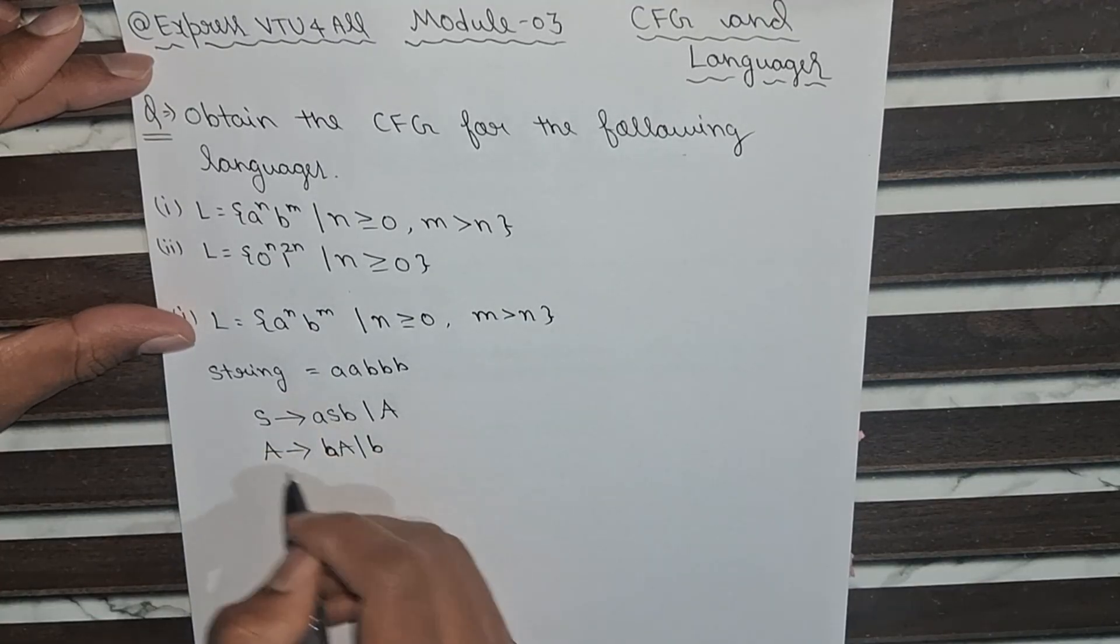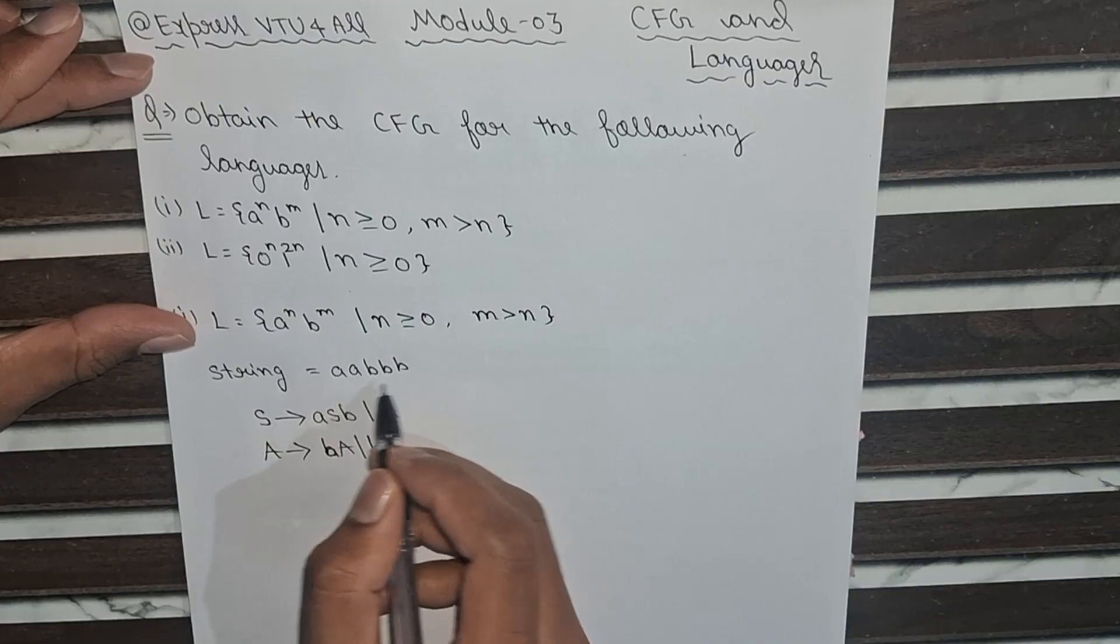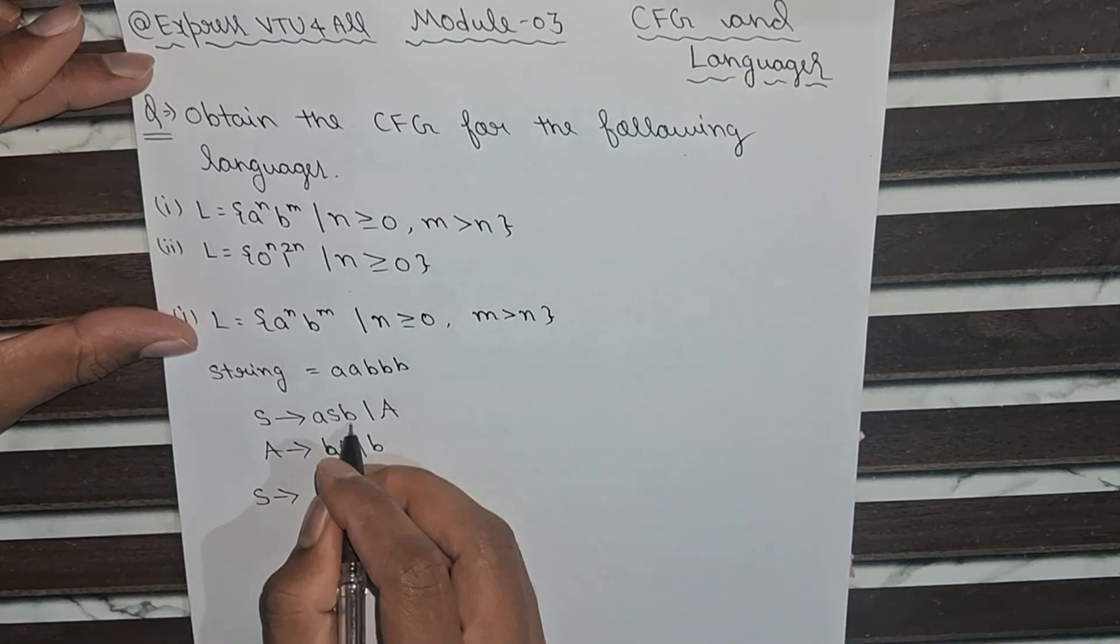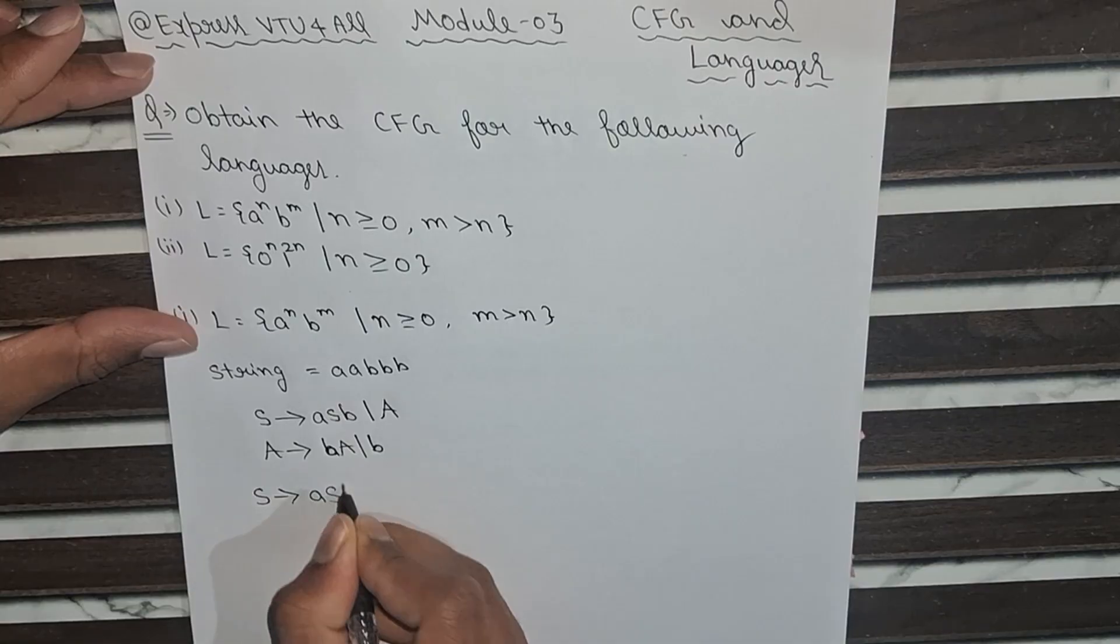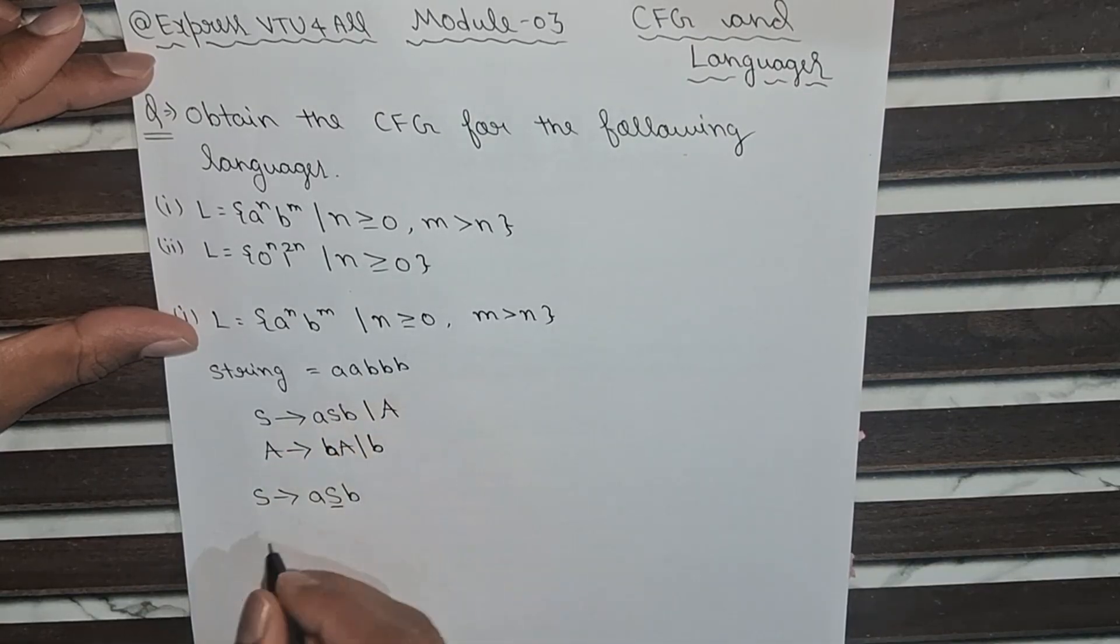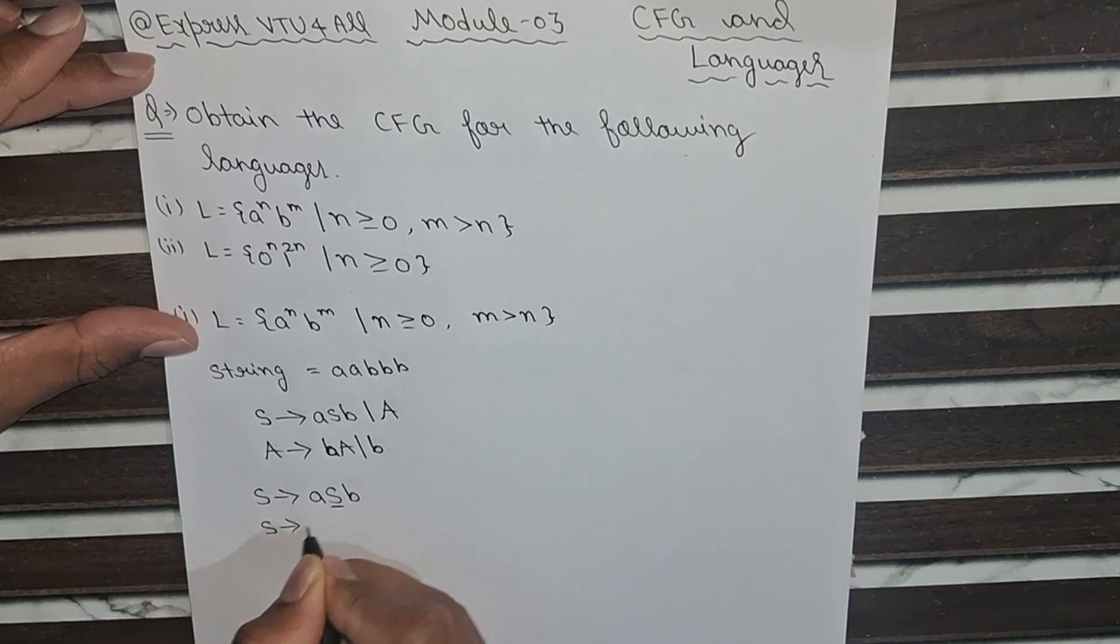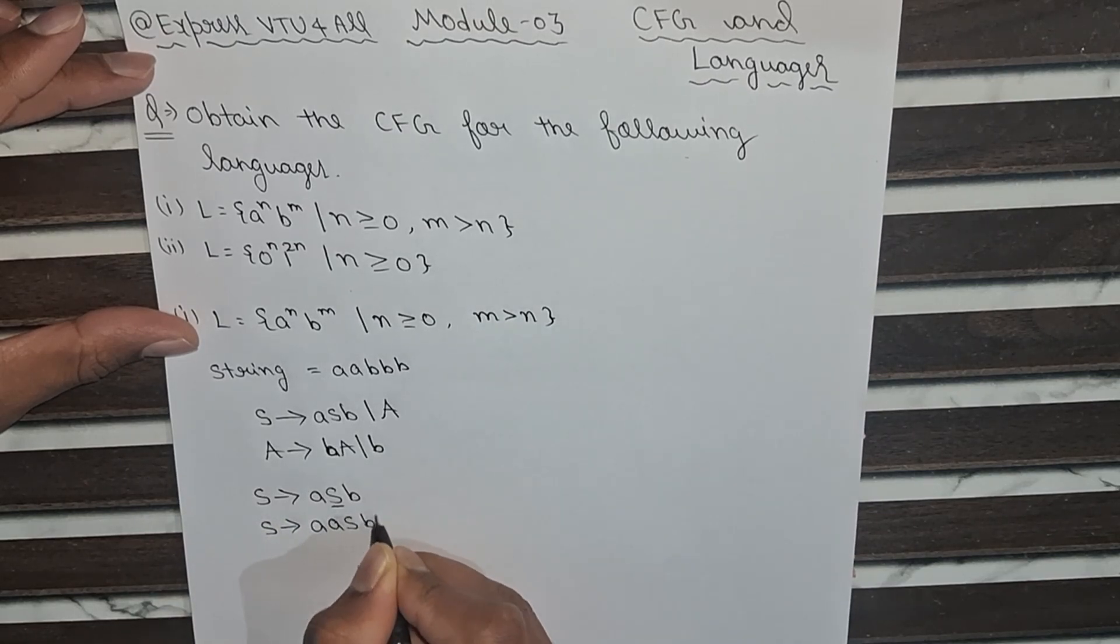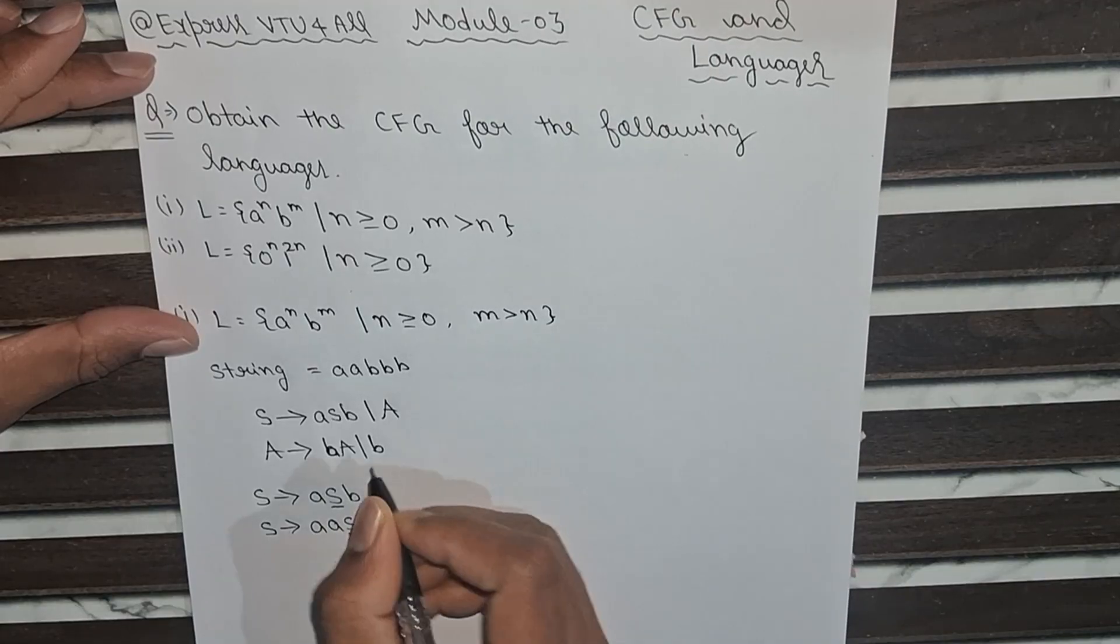So now we will follow this grammar to trace this string. Firstly we will take S, here we call aSb. So a, S, b. Here we will substitute S again as aSb to get this string. So now again a, a, S, b and b. Now this string we get from here.